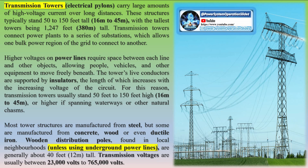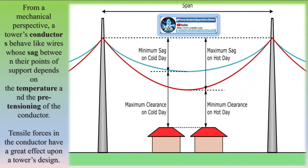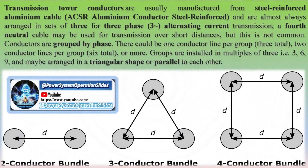Their shape, height, and mechanical strength depend on the stresses to which they are exposed. Towers do not transmit electricity themselves unless lightning strikes the ground wire strung along the top of the structure. This cable is designed to protect conductors by allowing lightning discharges to reach the ground through the tower.